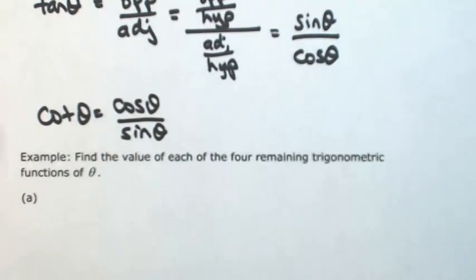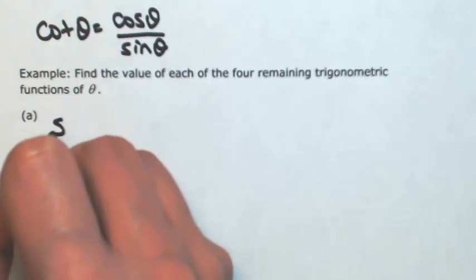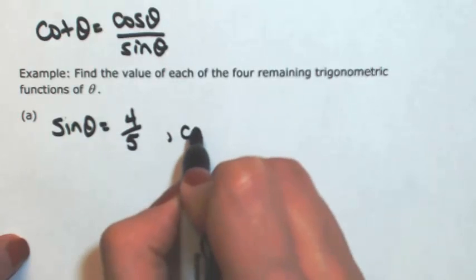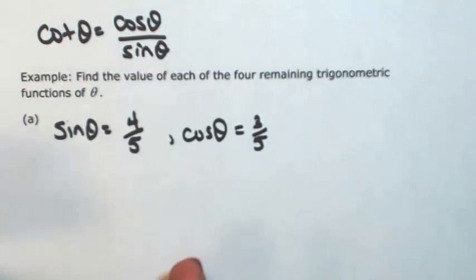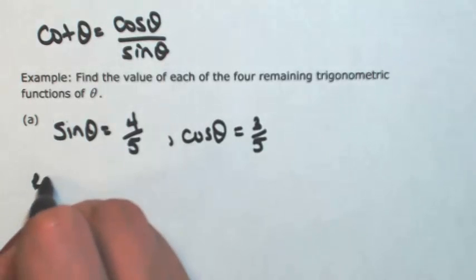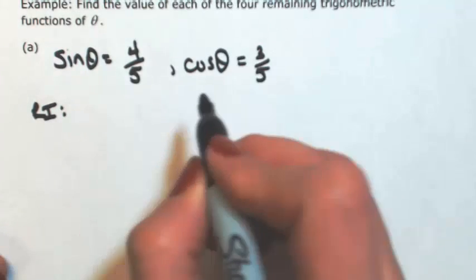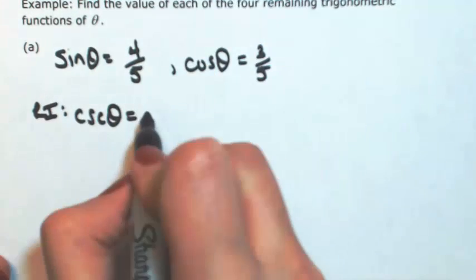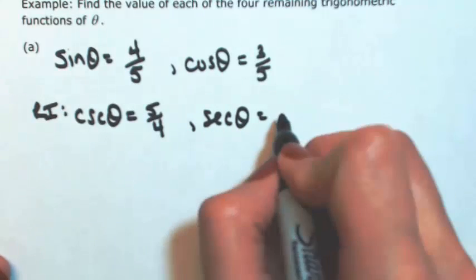Using these identities, I'm going to give you two trig functions and we're going to find the four remaining trig functions of theta. For example, let's say you're given that the sine of theta is 4/5 and the cosine of theta is 3/5. Anytime you're given a trig function, you immediately know its reciprocal. So using our reciprocal identities, we immediately know the cosecant of theta is the reciprocal of sine, so 5/4. And we also know that the secant of theta is the reciprocal of cosine, which is 5/3.